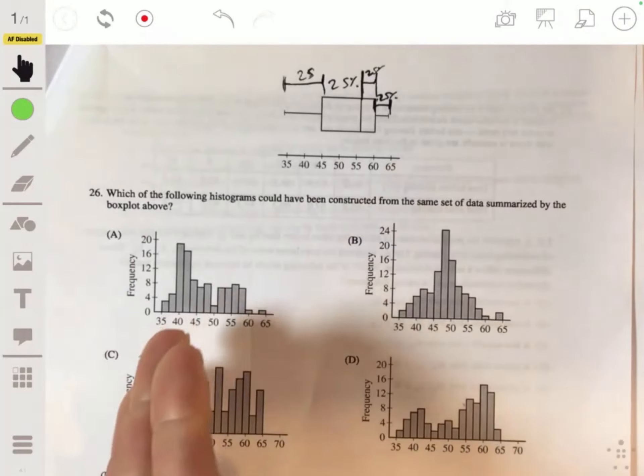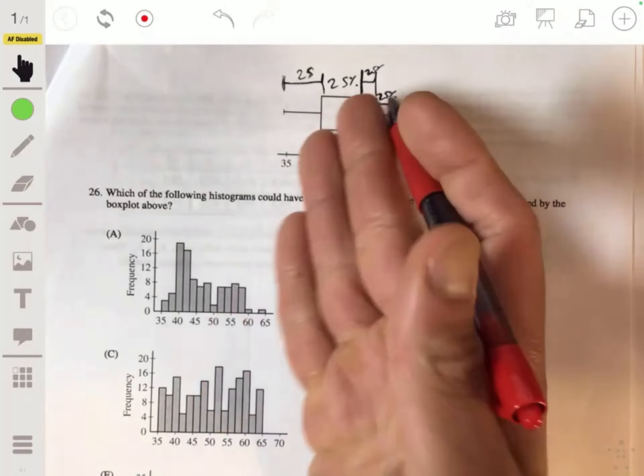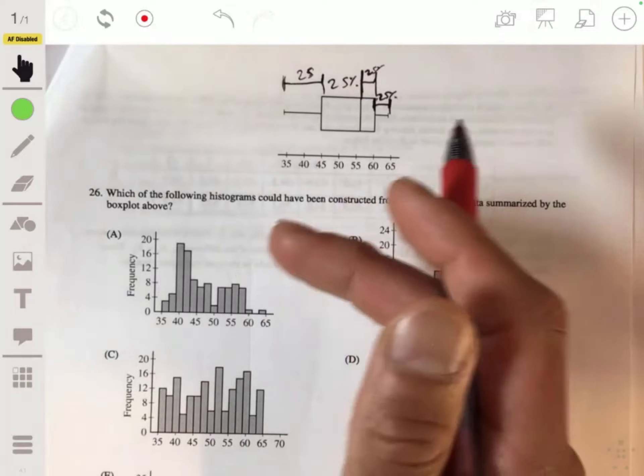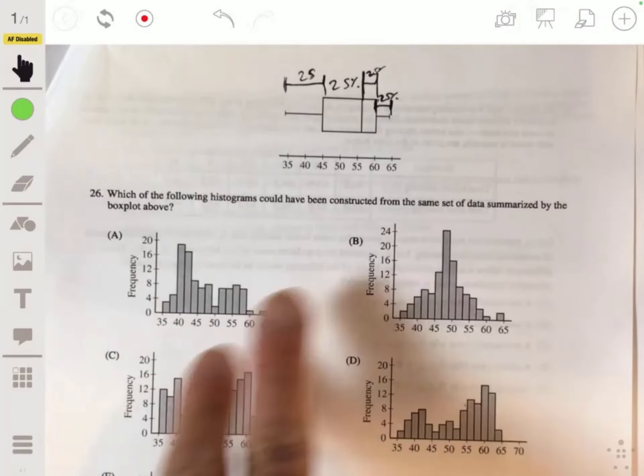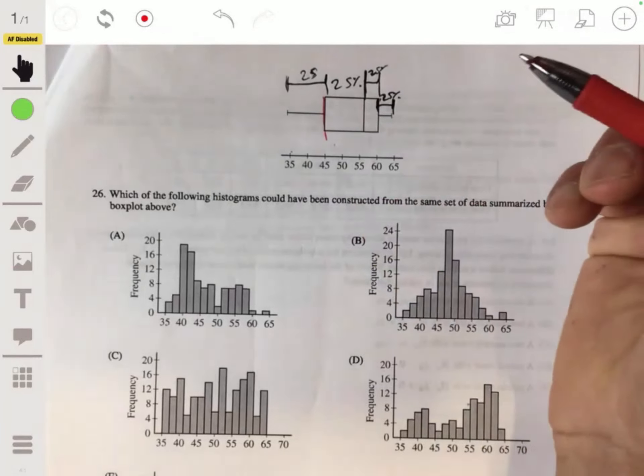So we want to see where would 25% of the total be, like from 35 to 45? Let's look at that first. Which of these would add up?